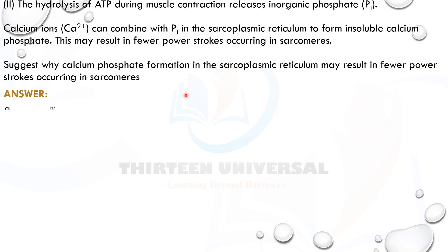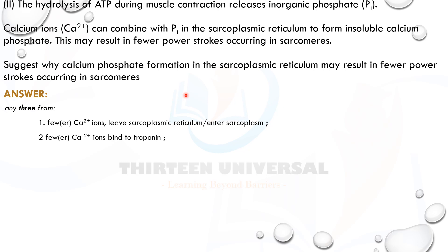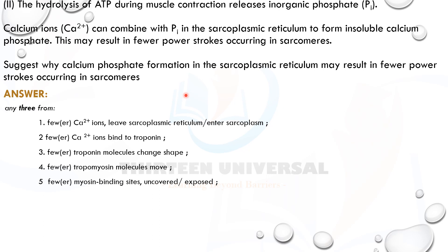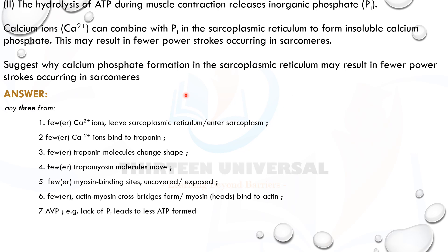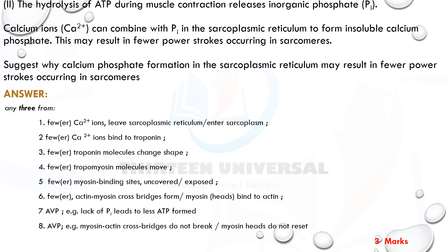The chain of 'fewer' events: fewer calcium ions leave the sarcoplasmic reticulum and enter the sarcoplasm; fewer calcium ions bind to troponin; fewer troponin molecules change shape; fewer tropomyosin molecules move; fewer myosin binding sites are uncovered on actin; fewer cross-bridges form; fewer power strokes occur. Also, lack of inorganic phosphate means less ATP is formed, so the cross-bridge cannot break and myosin cannot reset.